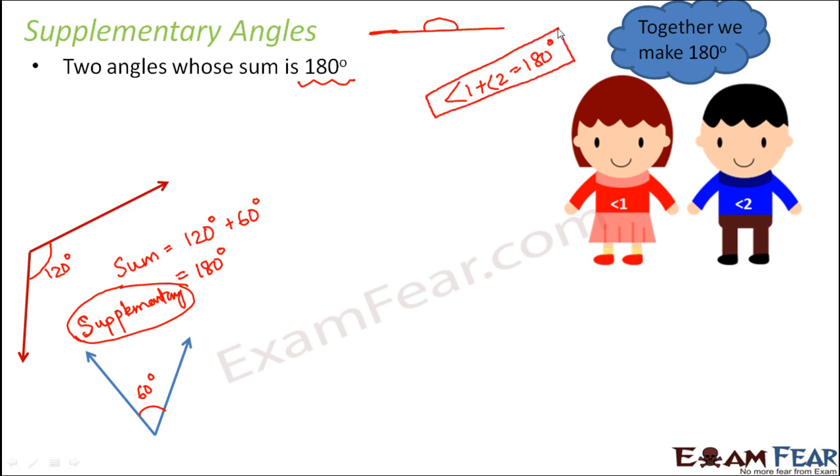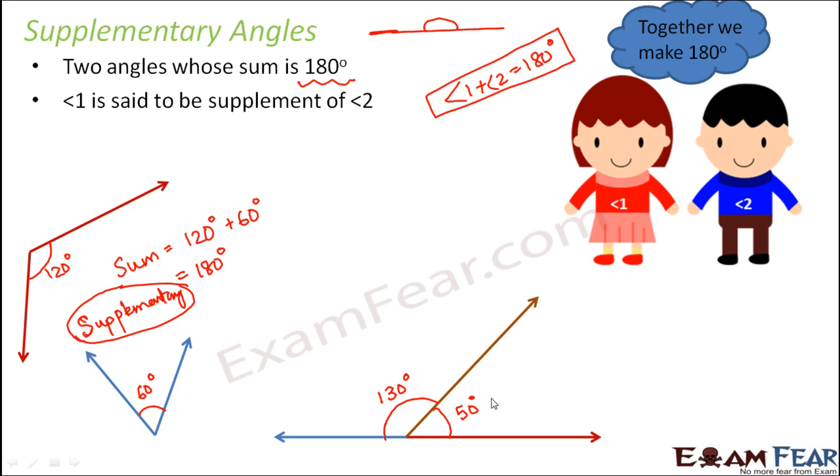So let us, in this case, we will call angle 1 is supplement of angle 2. So let us look at this example. So here you say, let's say you have this angle, which is maybe 50 degrees and here you have this angle, which is 130 degrees. So when you sum them up, it is 180 degrees, which is a straight line, right?